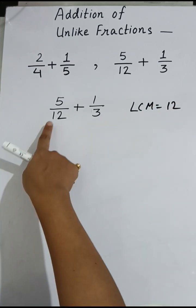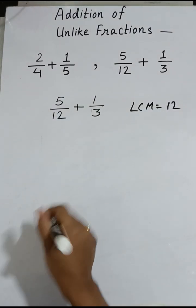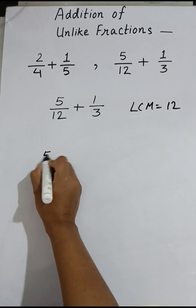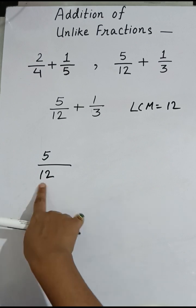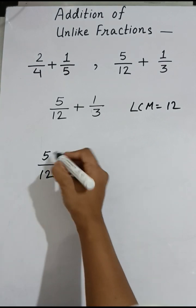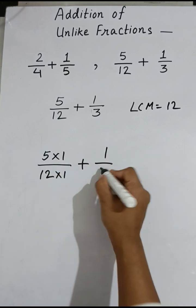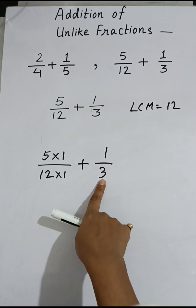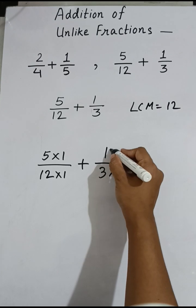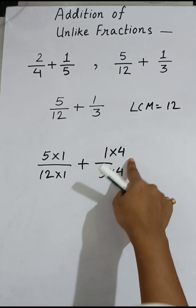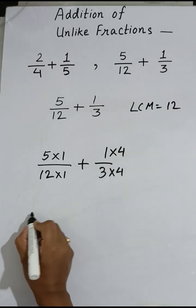We have to convert these unlike fractions into like fractions. For 5/12, the denominator is already 12, so we multiply by 1 — numerator and denominator both by 1. For 1/3, to bring the denominator to 12, we multiply both the denominator and numerator by 4.